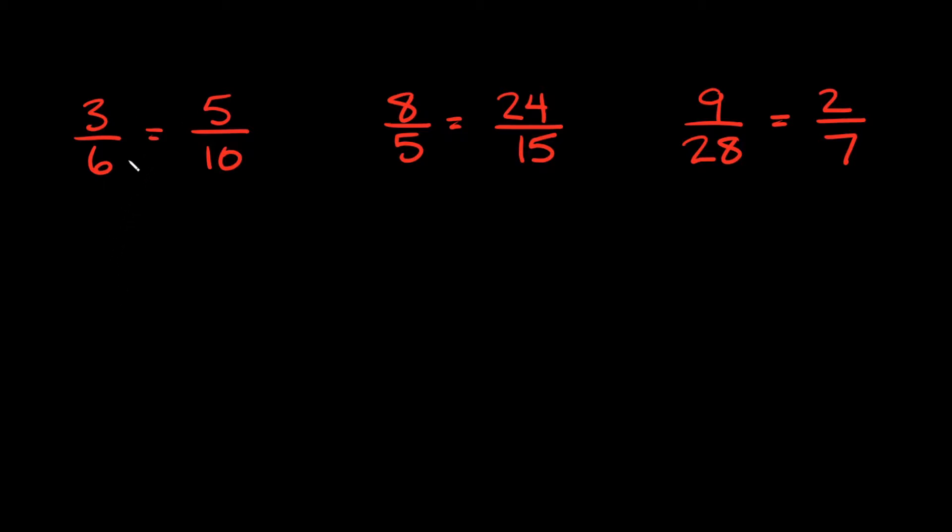So this first example we have here says 3 over 6 is equal to 5 over 10. To see if these really are proportional to one another, all you have to do is cross-multiply them.